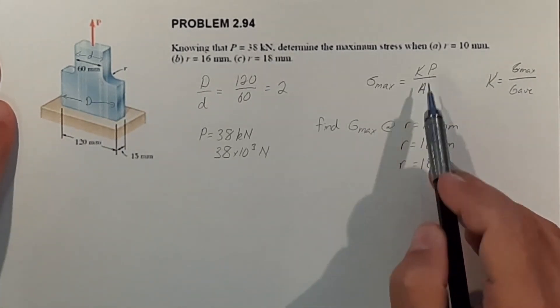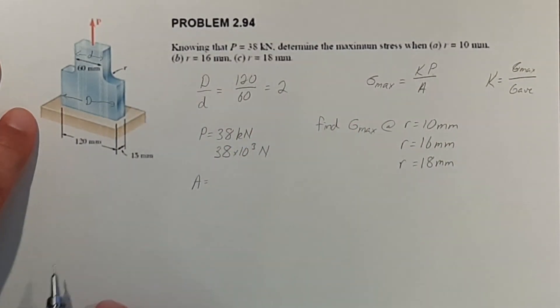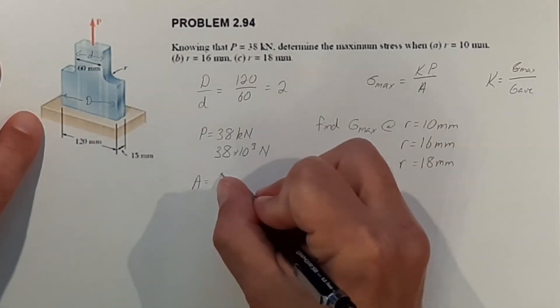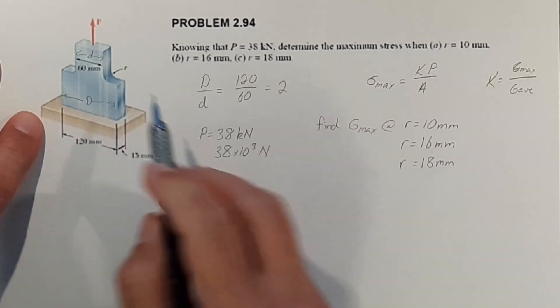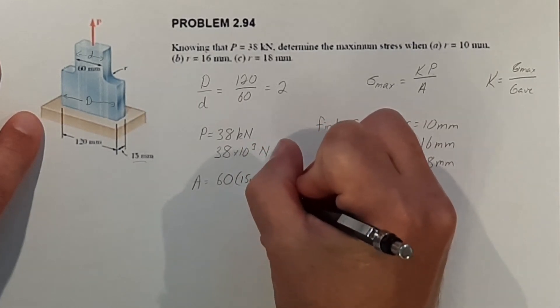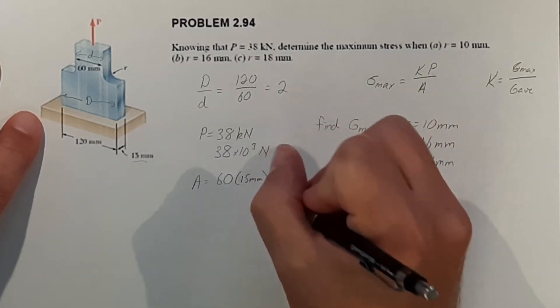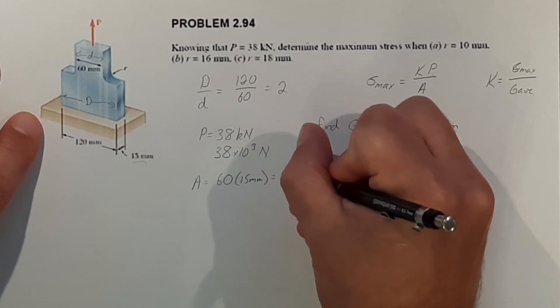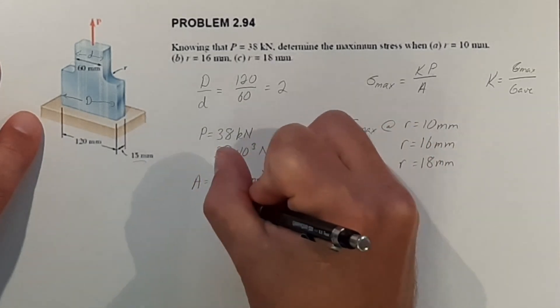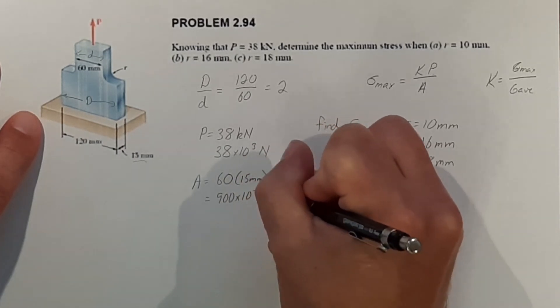So we know P. We can calculate A. Let's go ahead and do that. So A is equal to width times thickness. We have 60 millimeters across and our thickness is 15 millimeters. So 60 times 15 and that's going to equal 900 millimeters squared. But we want that in meters, so that will be 900 times 10 to the negative 6 meters squared.